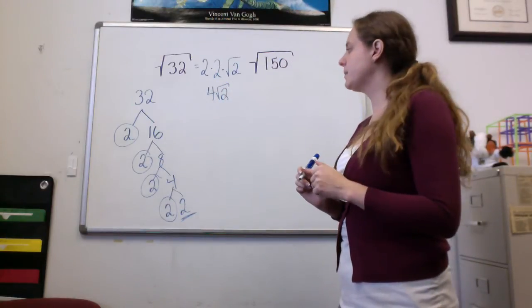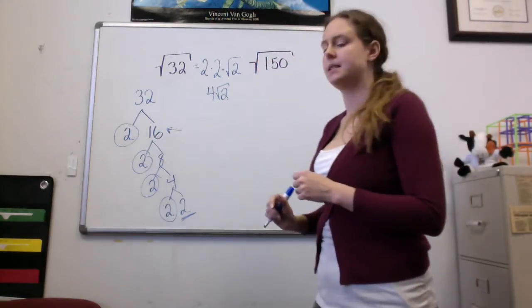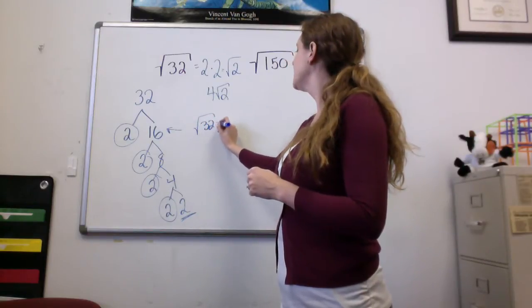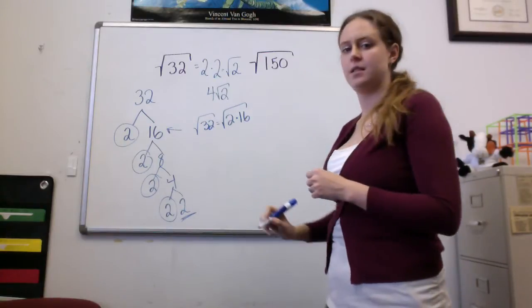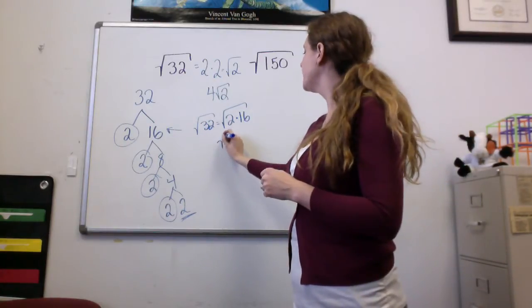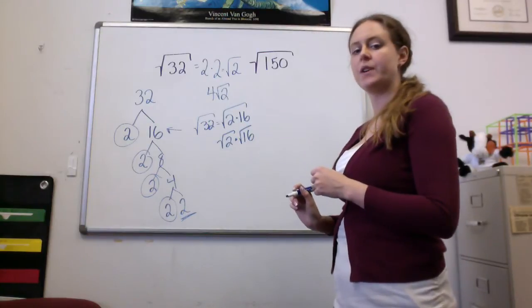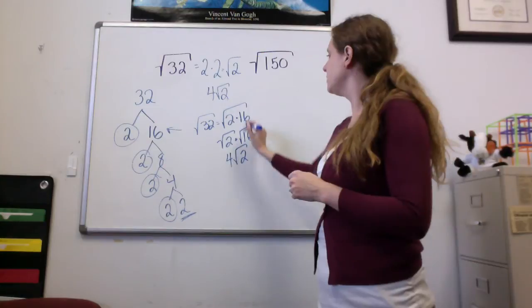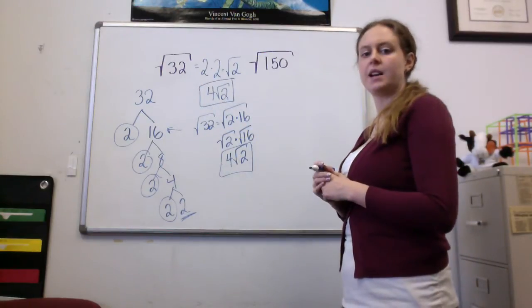Another way to think about this problem is to go back and look at this step right here. We have 2 times 16. So the square root of 32 is the square root of 2 times 16. But I know that the square root of 16 is just 4 because it's a perfect square. So I could write this as 4 square roots of 2, the same answer that I got above.